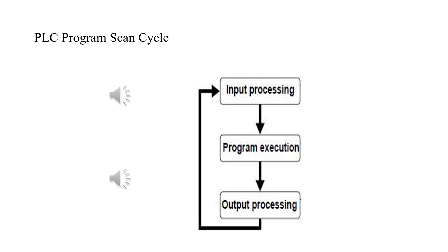Program scan cycles are executed in a duration of milliseconds — one program scan cycle is in the order of hundreds of milliseconds. If any input device changes its state, it will not be observed until the input processing phase of the next program cycle, which constitutes a latency in reacting to input changes. However, an input device will typically maintain its value for longer than 100 milliseconds, so any change on an input device will not be missed.